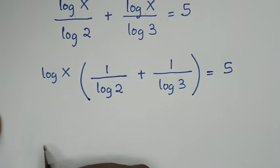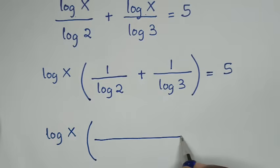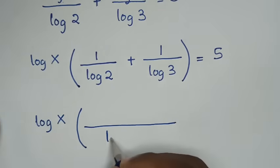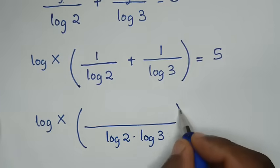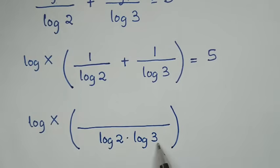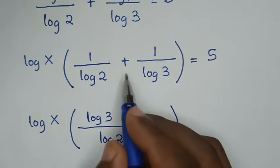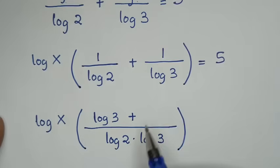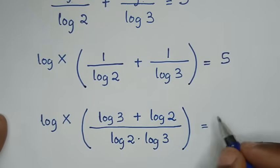In the next step we multiply through by log of 2 times log of 3. So log of 2 times log of 3 divided by log of 2 gives log of 3, and log of 2 times log of 3 divided by log of 3 gives log of 2. So it will be log of x times log of 3 plus log of 2 is equal to 5.